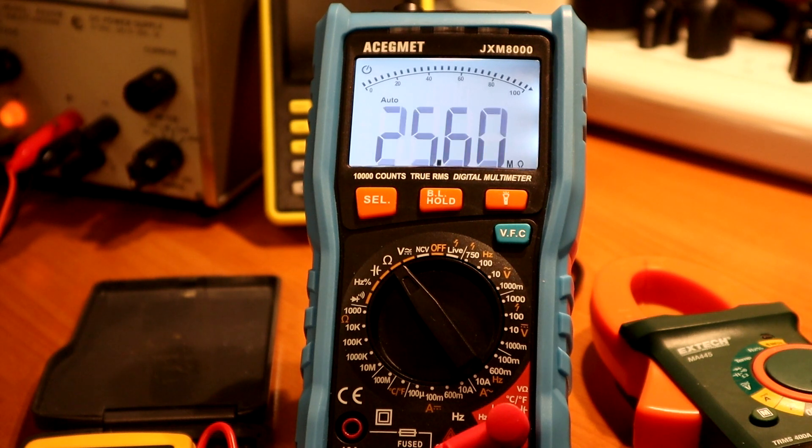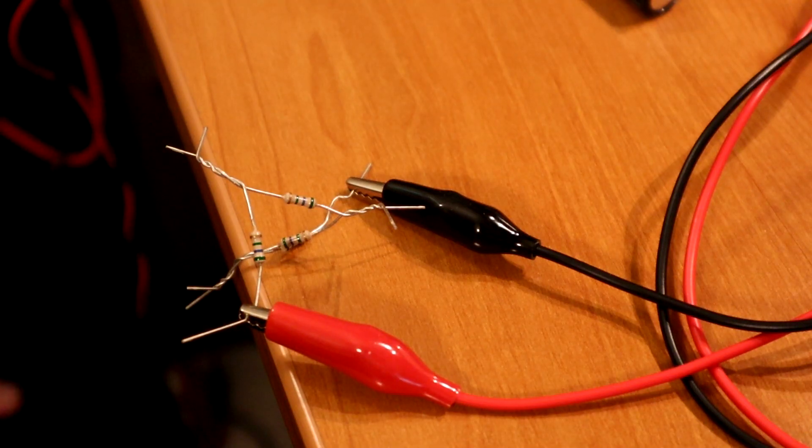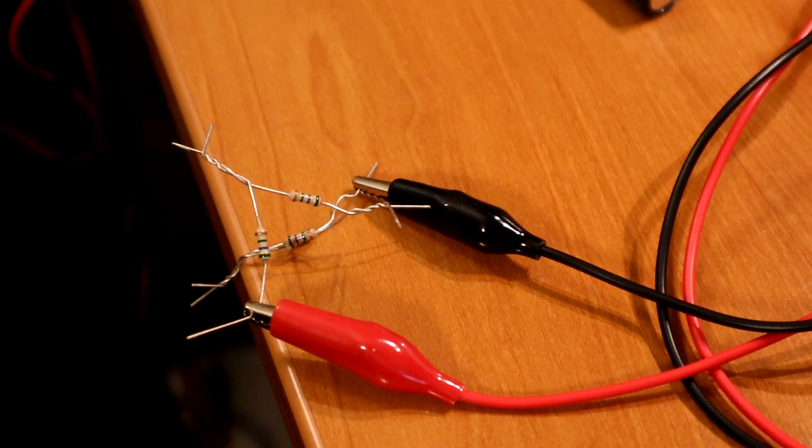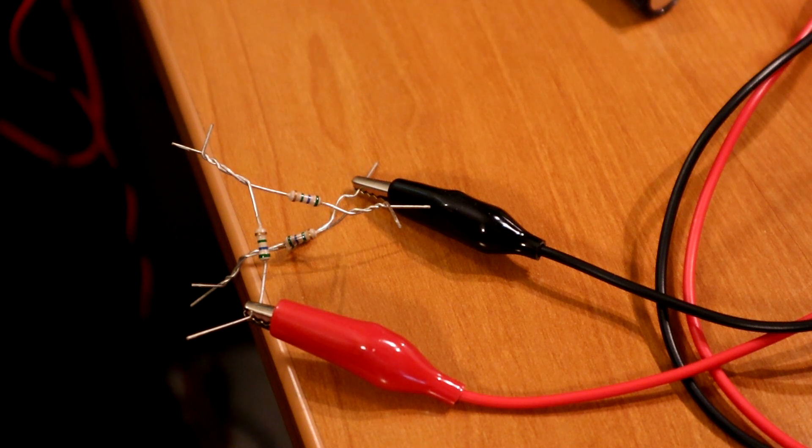I currently have this thing hooked up to about a 23 megaohm resistor, which I made out of several resistors. So you can see those resistors here. That's the only way I could get up past 10 megaohms. I didn't have something in the 23 megaohm range.